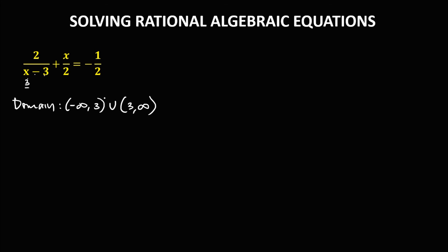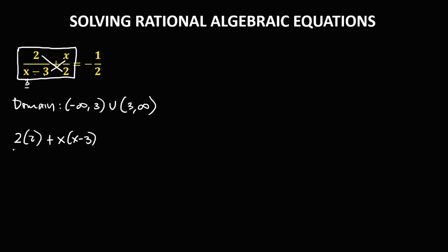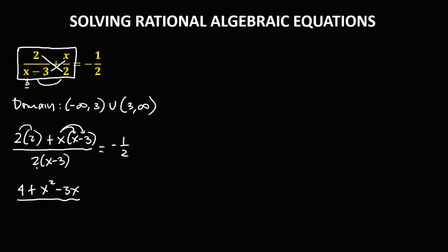To solve this rational algebraic equation, we simplify using cross multiplication. We have 2 times 2, plus x times (x minus 3), over (x minus 3) times 2, equals negative 1 over 2. Simplifying: 2 times 2 is 4, plus x squared minus 3x, over 2x minus 6, equals negative 1 over 2.